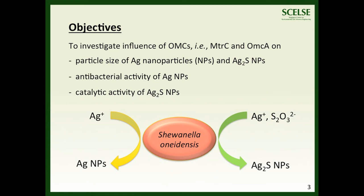Silver sulphide nanoparticles are catalysts of methyl-viologen reduction. We used this system as a model catalytic reaction to investigate the impact of Outer Membrane C-Type Cytochromes on the catalytic activities of biogenic silver sulphide nanoparticles.